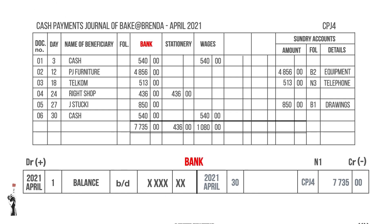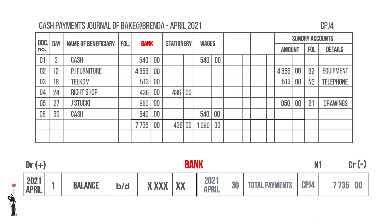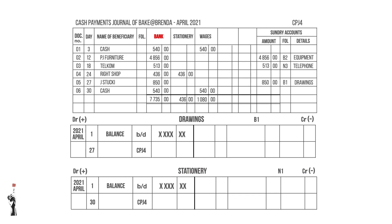Bank is credited, and we will use the words 'total payments' as the explanation. The rest of the transactions are debited with the word 'bank.'